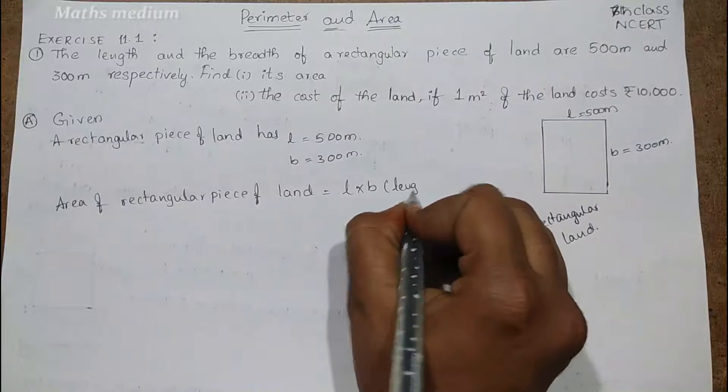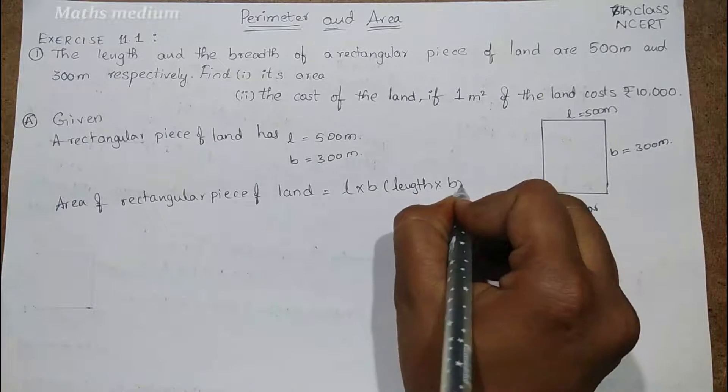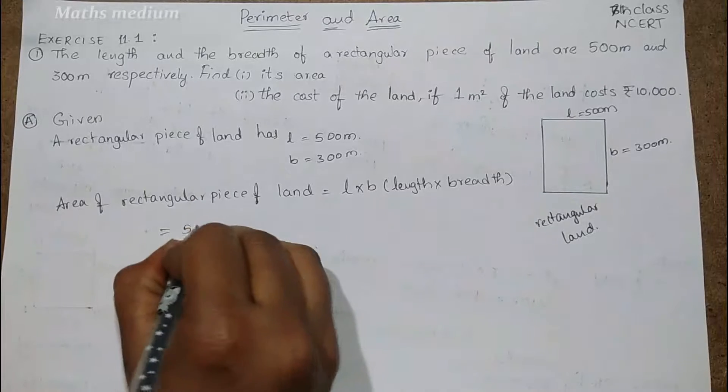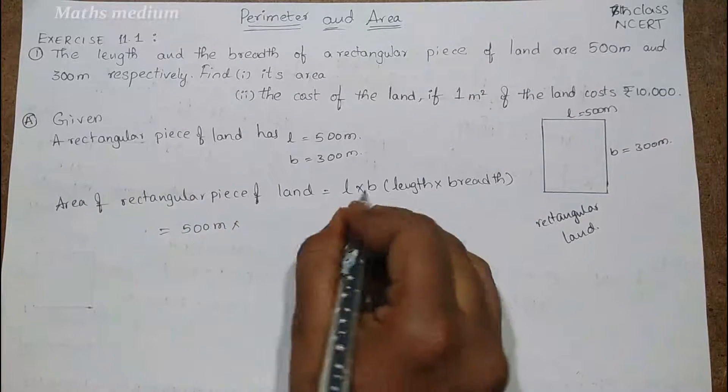So now we know L is 500 meters, breadth is 300 meters. 500 meters into 300 meters.